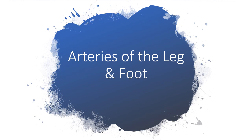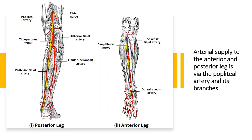Arteries of the leg and foot. The arterial supply to the anterior and posterior leg comes from the popliteal artery and its branches. In the leg, the popliteal artery descends down the posterior thigh, giving rise to genicular branches supplying the knee joint. It moves through the popliteal fossa, exiting between the gastrocnemius and the popliteus muscle.